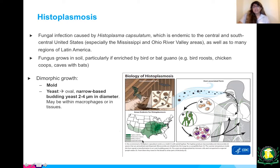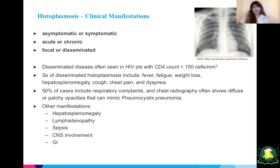Clinical manifestations of histoplasmosis can be asymptomatic or symptomatic, acute or chronic, focal or disseminated. It's often disseminated in HIV patients with CD4 count less than 150 — 150 is that key number. Symptoms include fever, fatigue, weight loss, hepatosplenomegaly, cough, chest pain, and dyspnea. About 50% have respiratory complaints, and chest radiograph often shows opacities that can mimic pneumocystis pneumonia — similar patterns to the chest X-ray and CT I showed earlier.